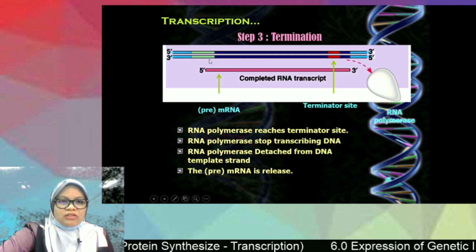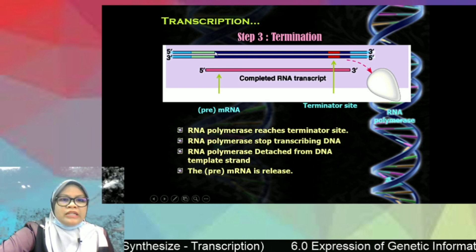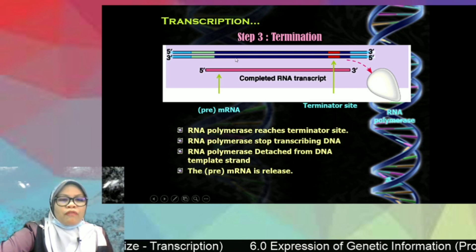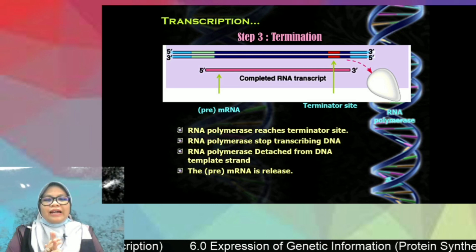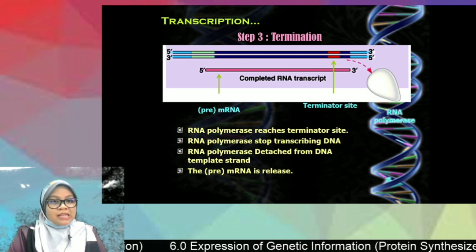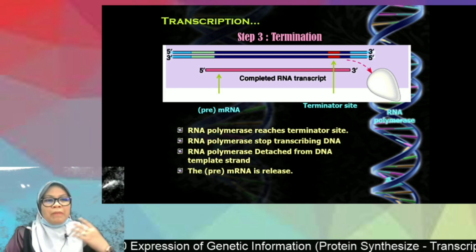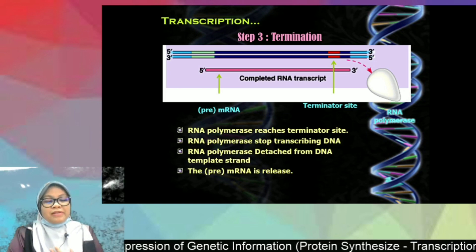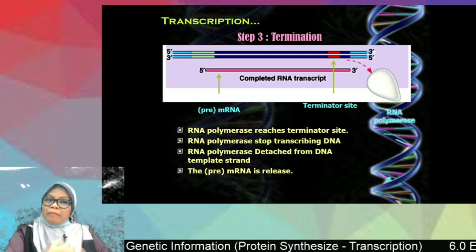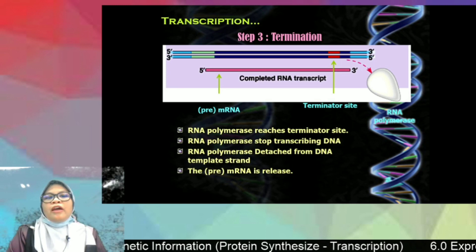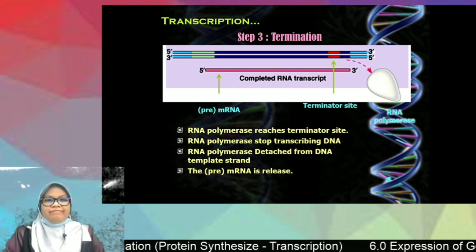After RNA polymerase has transcribed a region, the DNA double strand in that region re-forms its double helix structure.